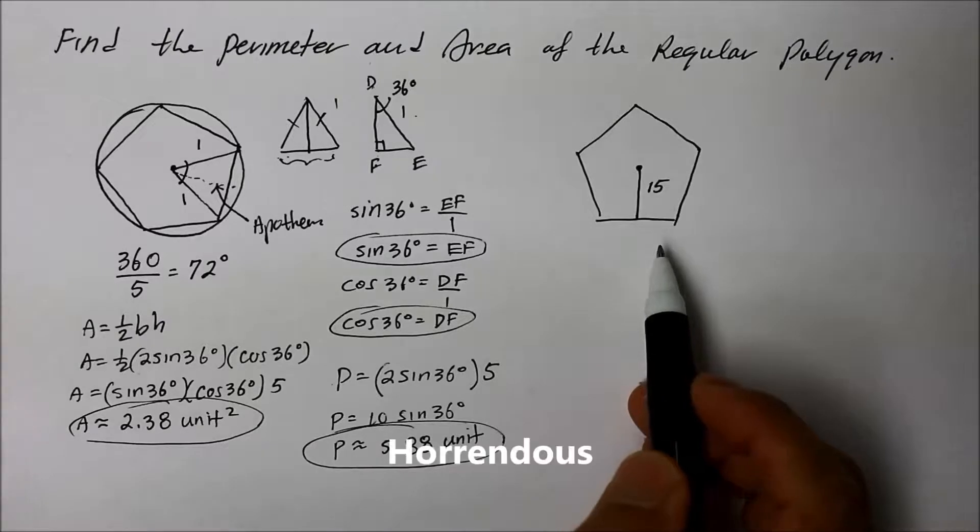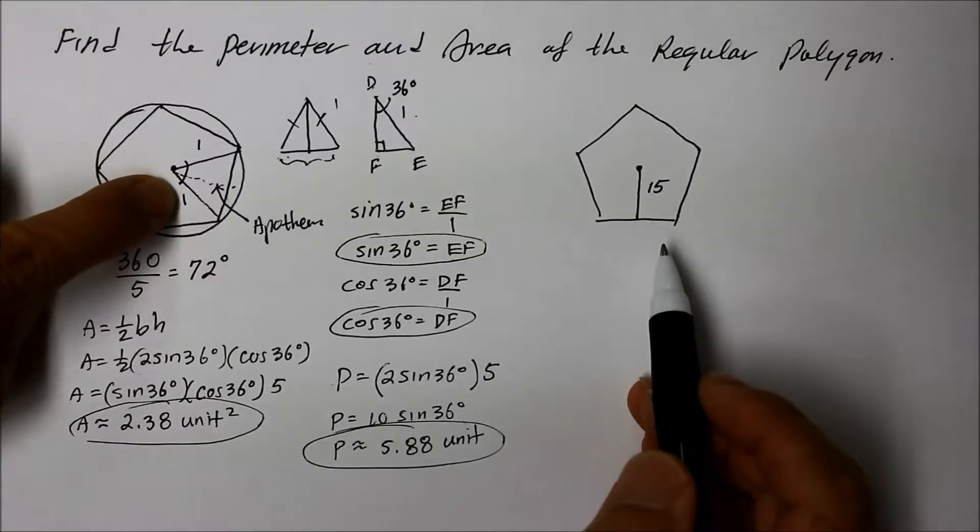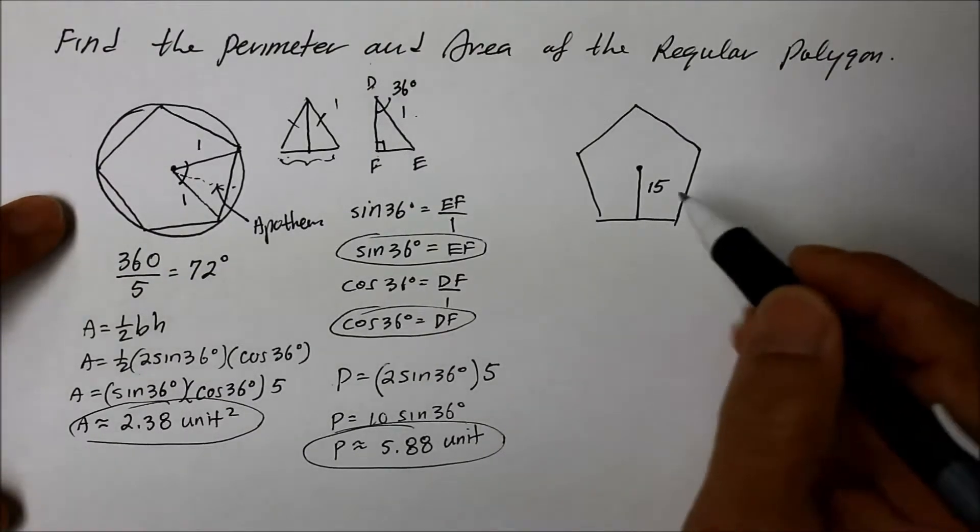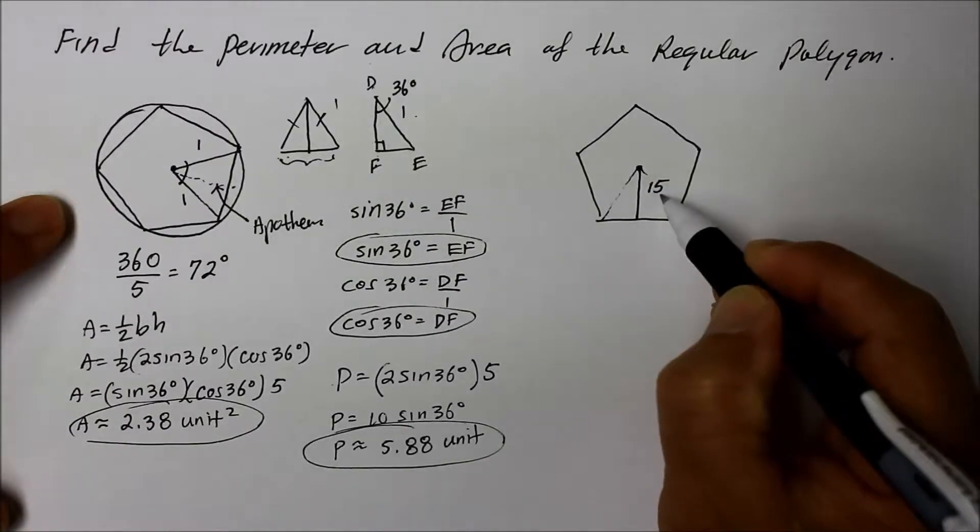So how did this work out? Last time a side was given, but this time a apothem. So once again, let's think of this in terms of a triangle, right there, right there.